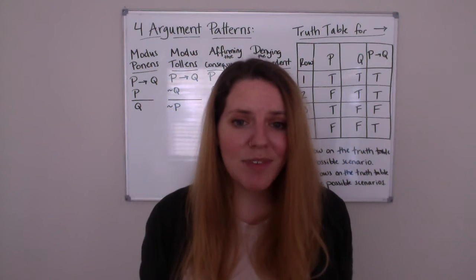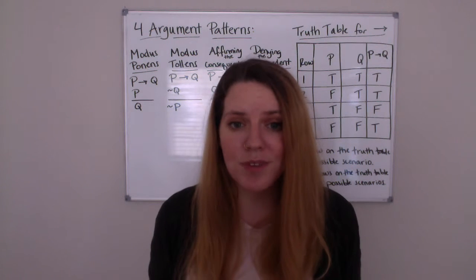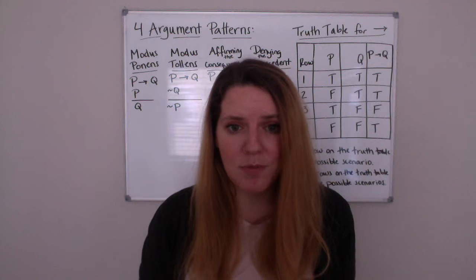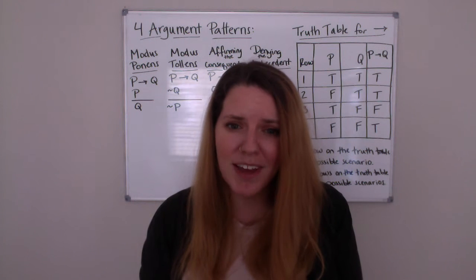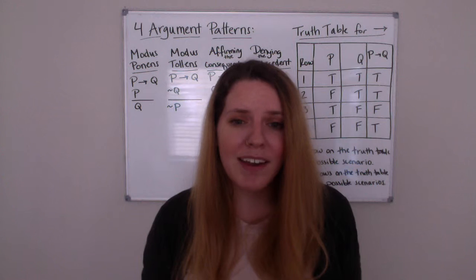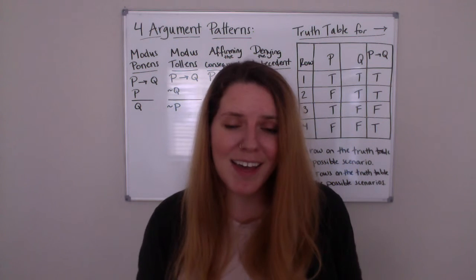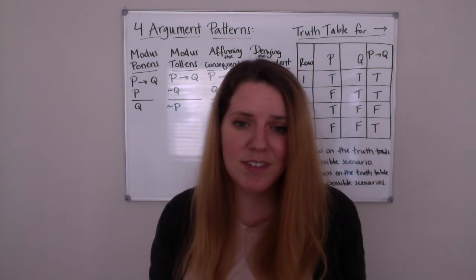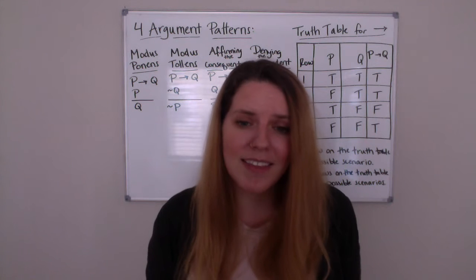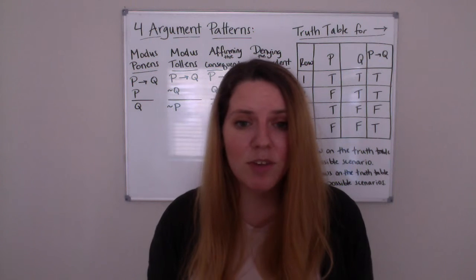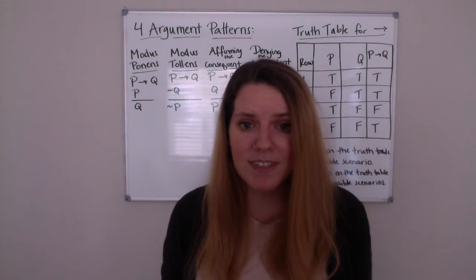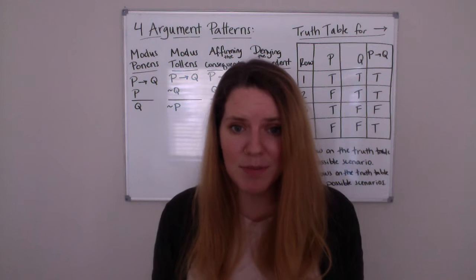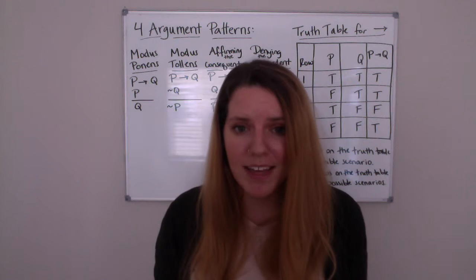Hey guys, in this video we're going to continue our discussion from last week about using truth tables to test for validity. To do that, I thought we would just go over question 9 from last week's homework. Some of you got it right and got all the points, some got it kind of right, and a lot of people got very few or no points on that question. I also got emails from students who did get all the points but didn't quite understand why, so I thought we'd go over this whole thing and use it as a jumping-off point to start using truth tables to test for validity in more complex arguments.